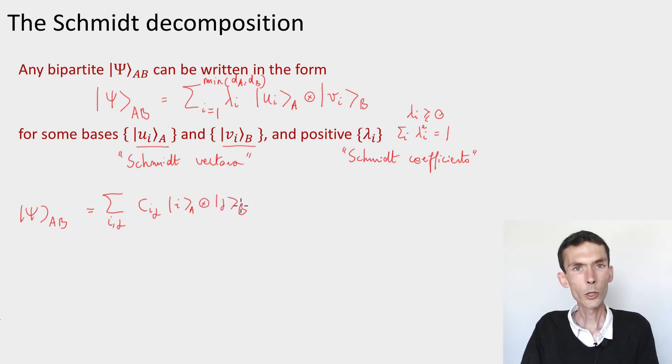And see that we're not quite there yet, right? The difference between what I just wrote and our target Schmidt decomposition is that I have a sum over two indices here, i ranging from 1 to the dimension of A and j ranging from 1 to the dimension of B.